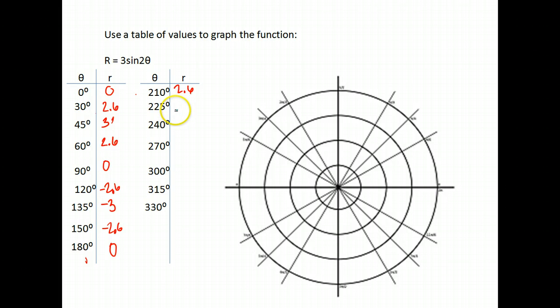If you do the 225 times 2, you get 450. The sine of 450 is 1 times 3 is 3. So you can continue there using your calculator to find those values. I'm going to pause and fill in the rest, and then we'll graph.